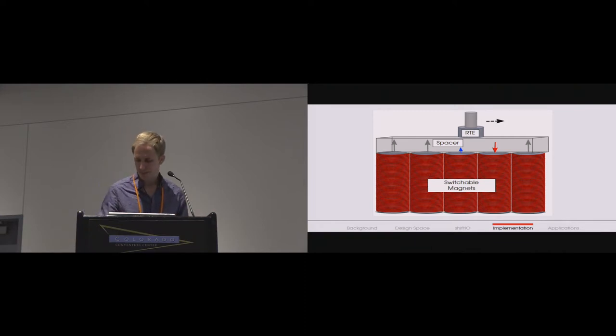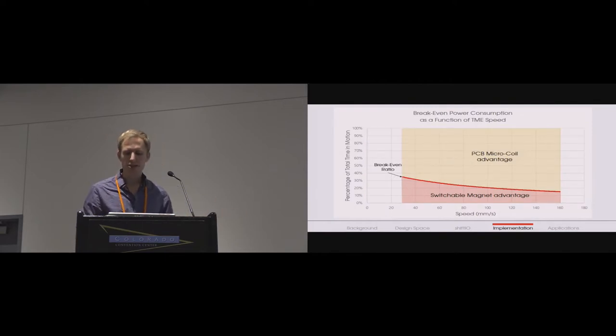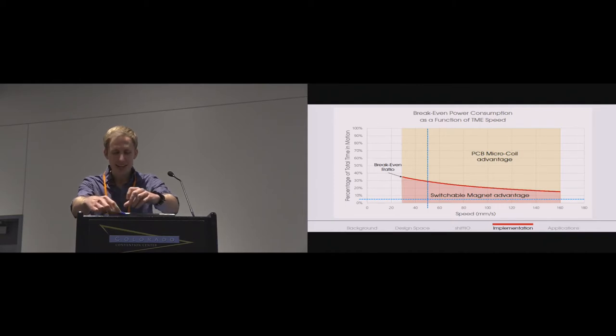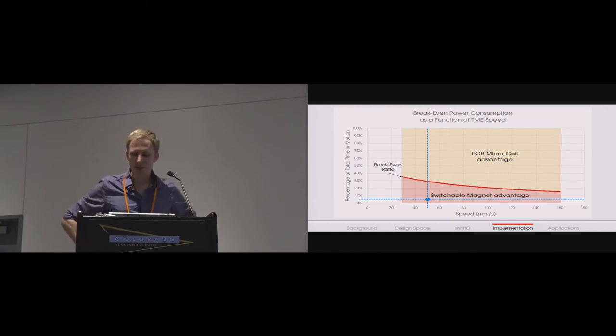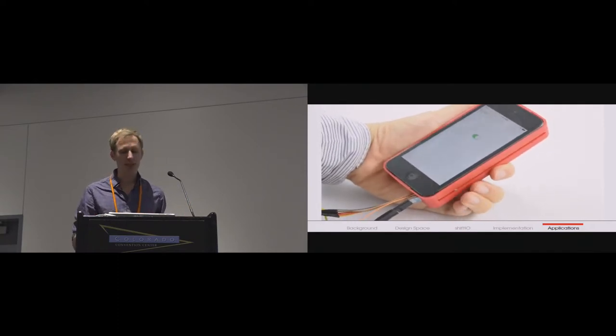This graph compares the power efficiency of these two prototypes and describes the applications where each is advantageous. On the x-axis, we show the speed at which we move an RTE. And on the y-axis, we show the fraction of total operation time spent moving. The line shows the region at which the two prototypes are equally power efficient. For example, if an element moves at 50 millimeters per second and spends less than 10% of its time reconfiguring into new positions, then the switchable magnet implementation is advantageous. So to put this in context, the game application I introduced at the start of the talk might be most efficient with a switchable magnet implementation since the controls reconfigure once and then remain in place. Someone constantly receiving and dismissing notifications represented by RTEs might make better use of the PCB microcoil variant since elements are frequently in motion.